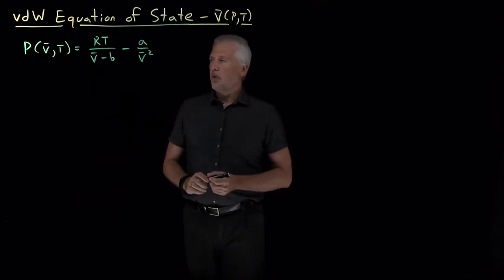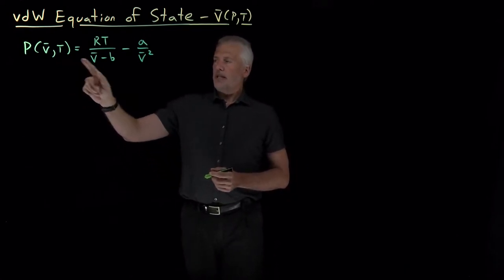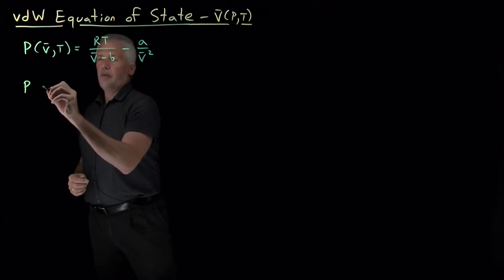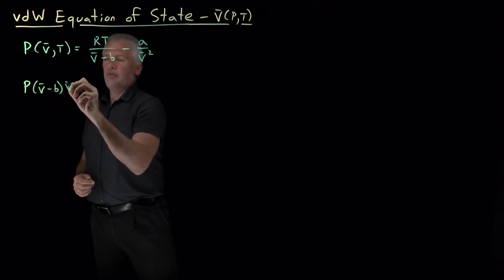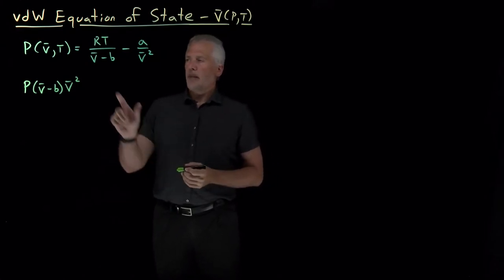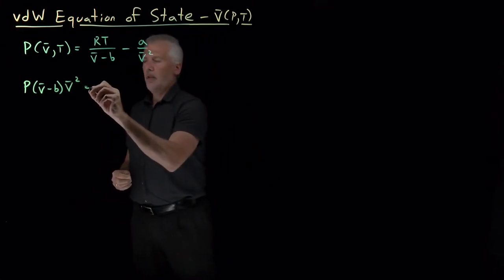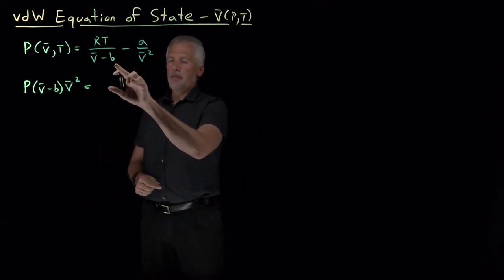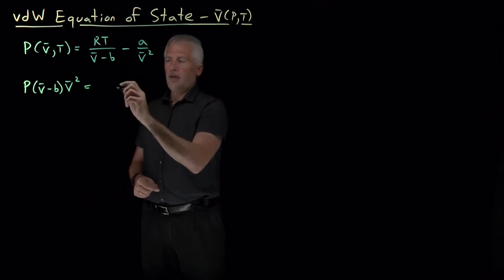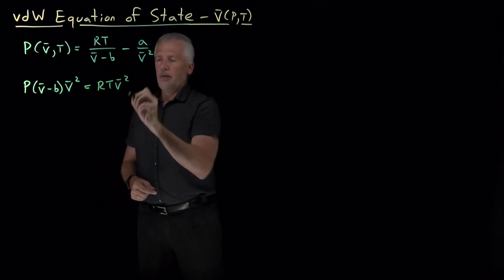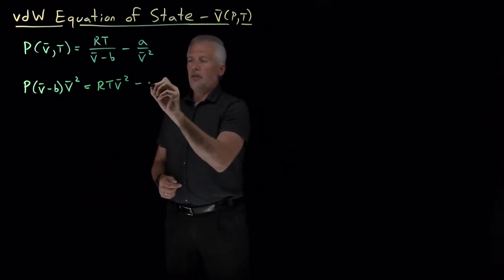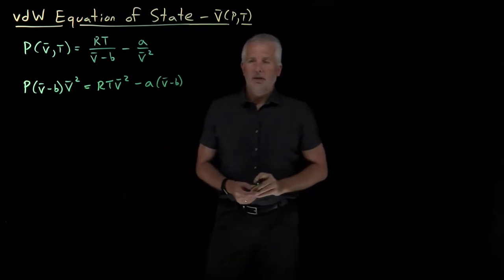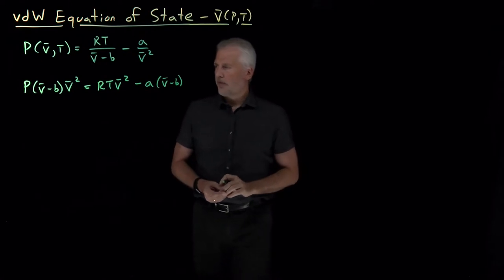To isolate the V̄ terms in this equation, let's first get rid of the fractions. If I multiply all the way through by V̄ minus b and also by V̄ squared, that'll get rid of the two denominators. On the left, I've already multiplied by V̄ minus b and by V̄ squared. On the right, multiplying by V̄ minus b gets rid of the first denominator, and I additionally multiply by V̄ squared. In the second term, the V̄ squared kills the denominator and I've got a V̄ minus b that is introduced.